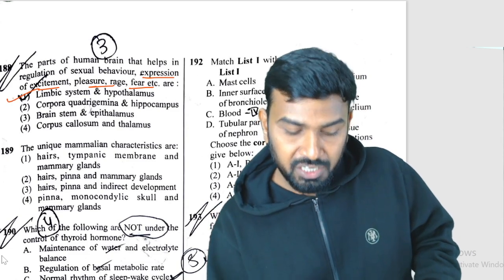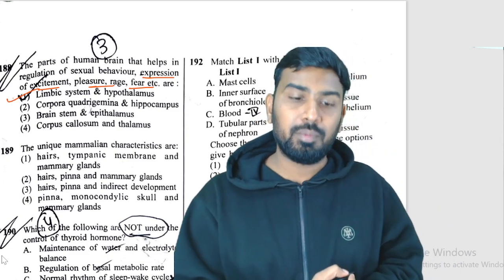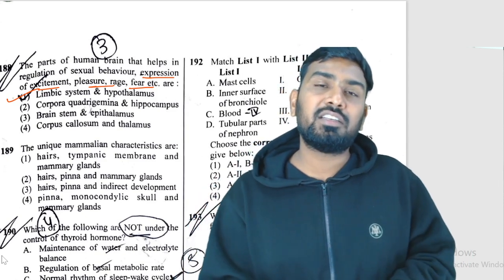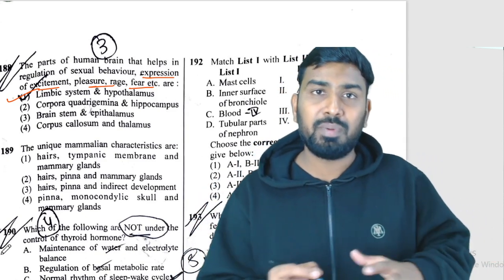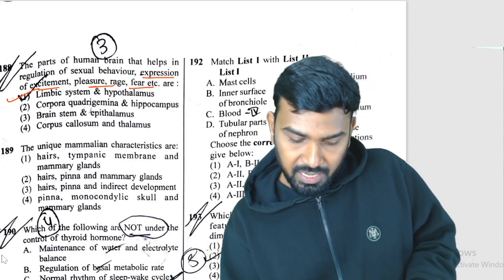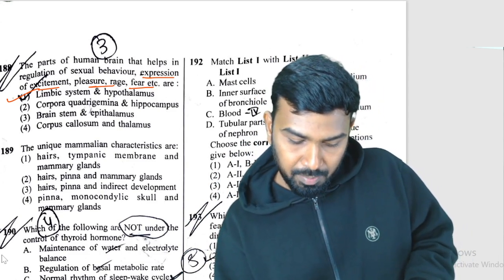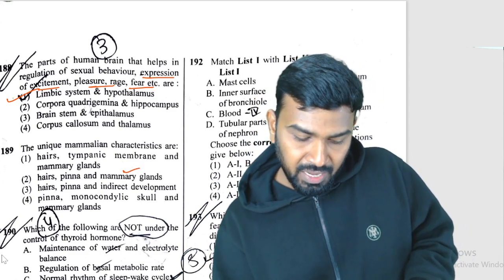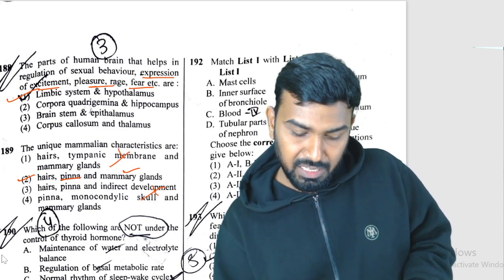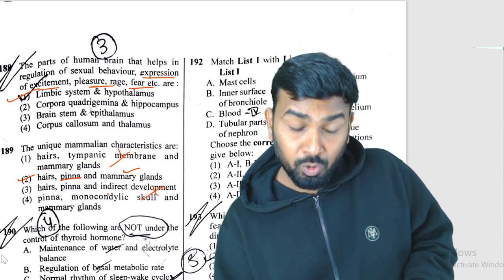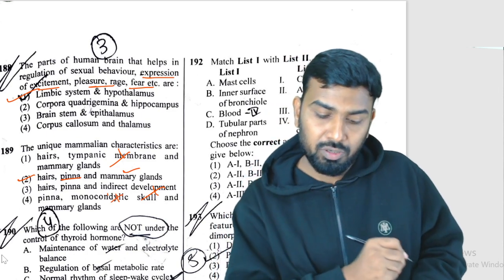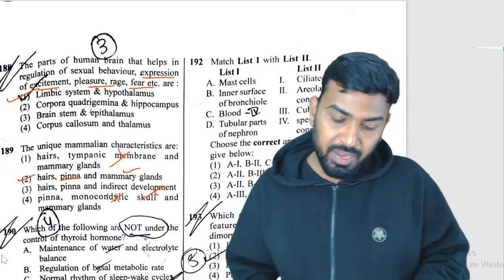Question 189: unique mammalian characters. Mammary glands should be present, hair should be present, and pinna (external ear) is also present. Tympanic — indirect — is wrong. Monocondylic skull is not mammalian; it is dicondylic. So the correct options include mammary glands, hair, and pinna present.